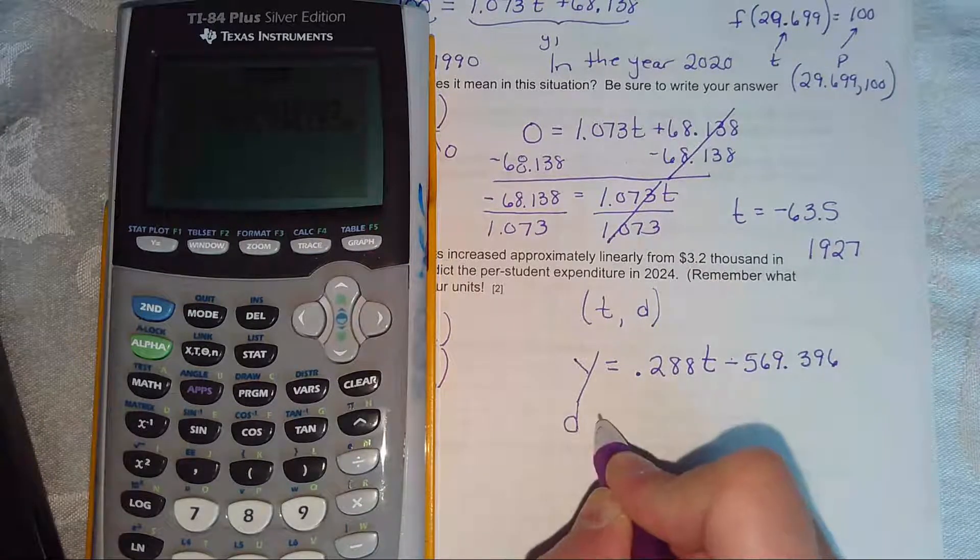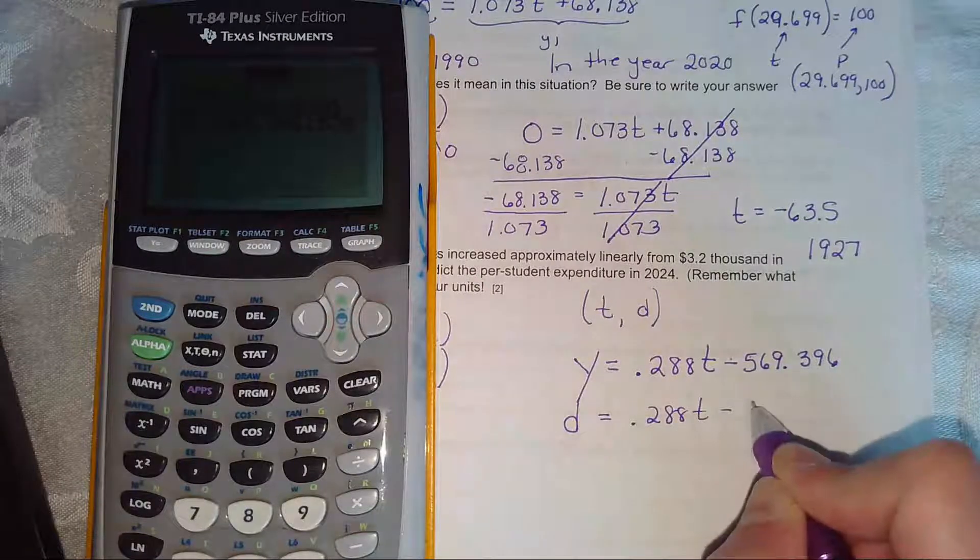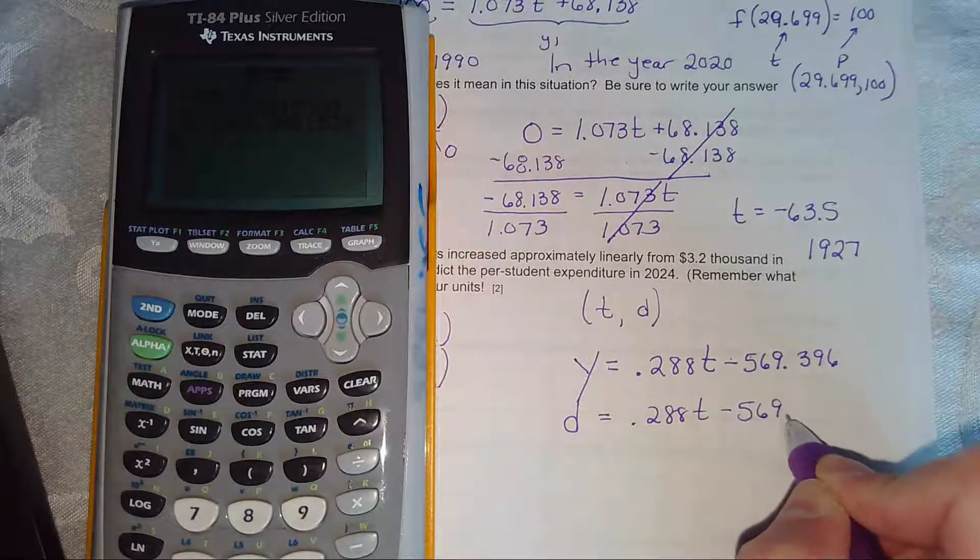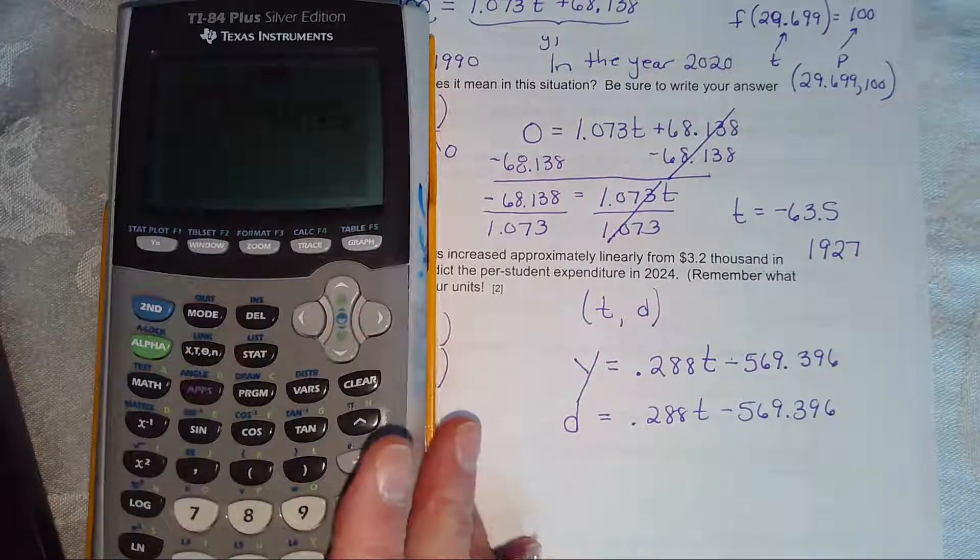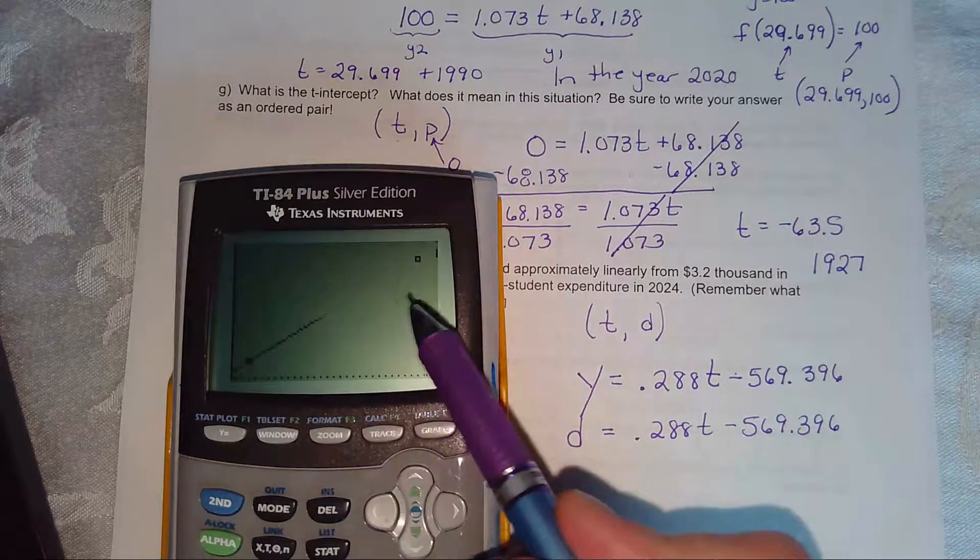MyMathLab asks you to round it to three decimal places. So y equals the slope plus b. Instead of y, I'm going to say d is dollars. Now this is in, if you hit graph, this is now in our calculator.